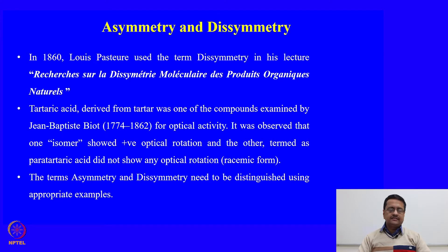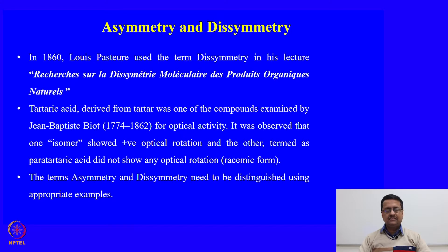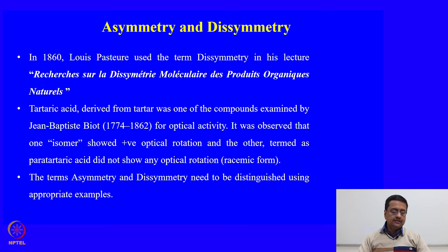As early as 1860, Louis Pasteur used the term dissymmetry in his lecture 'Recherches sur la dissymétrie moléculaire des produits organiques naturels,' which essentially means that essential organic materials can have dissymmetric molecules. Before Pasteur's identification, tartaric acid derived from tartar was examined by Biot for optical activity. One isomer showed positive optical rotation while the other, termed para-tartaric acid, showed no optical rotation — meaning it was a racemic mixture.